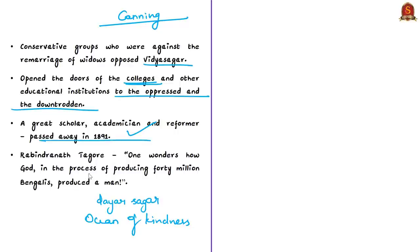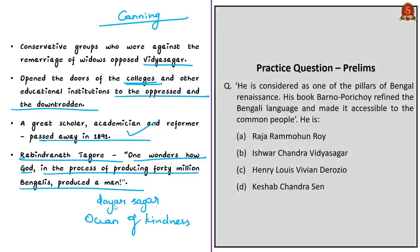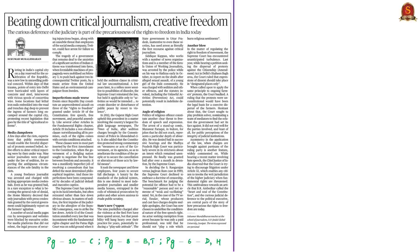A very important statement by Rabindranath Tagore after his death reads: 'One wonders how God, in the process of producing 40 million Bengalis, produced a man like him.' These are some of the important contributions and activities of Ishwar Chandra Vidya Sagar, also called Dayanidhi Sagar. Now let's move on to the analysis of the next news article.